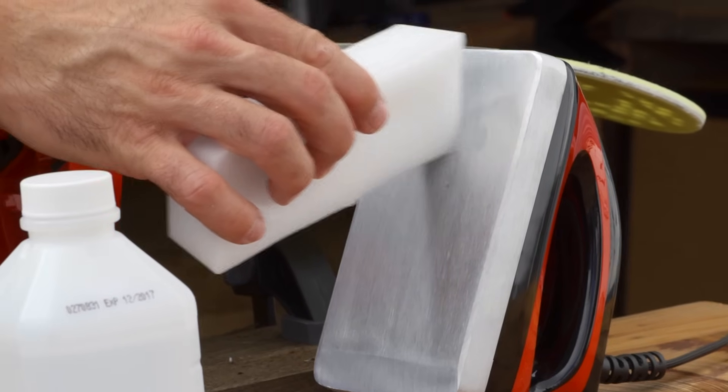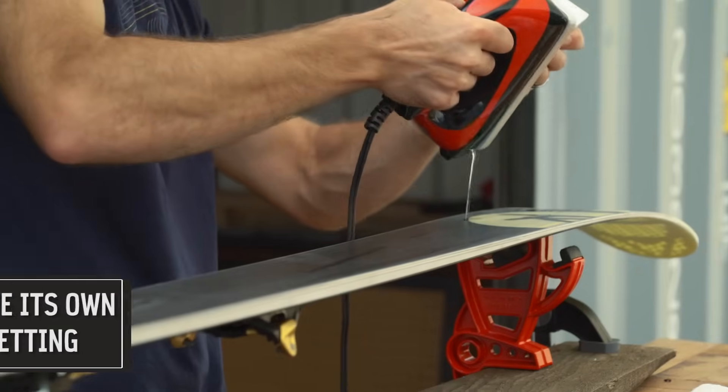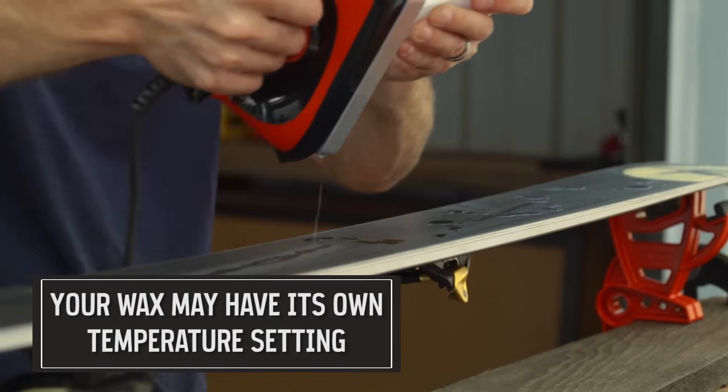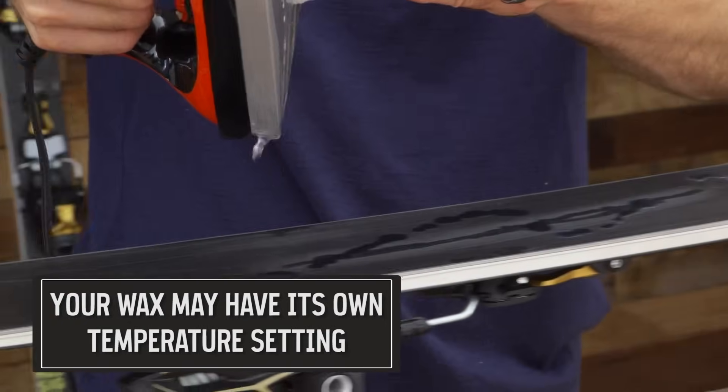Heat up the iron until it's just warm enough to melt the wax. Then drip a line of wax down the ski. If the wax begins to smoke, the iron is too hot. Let it cool before starting again.